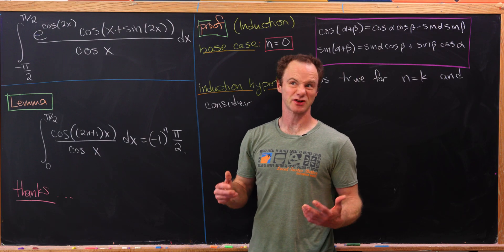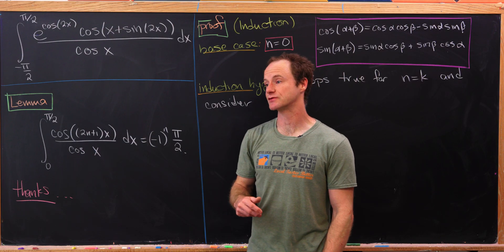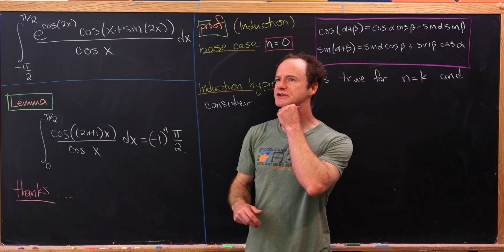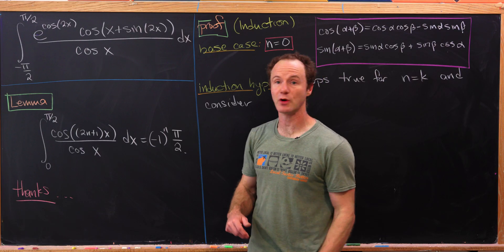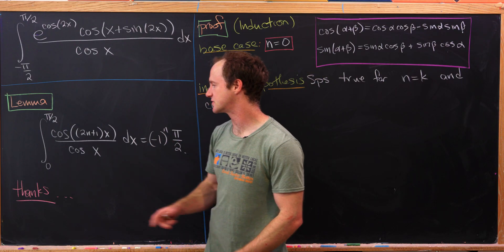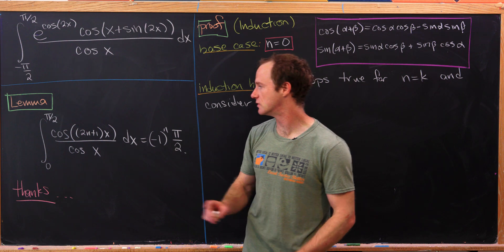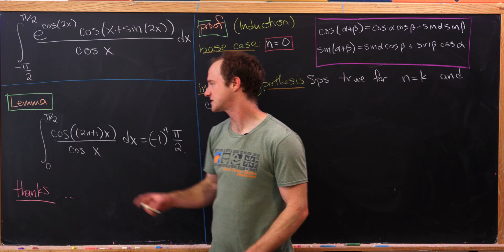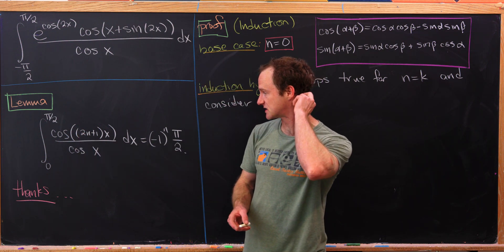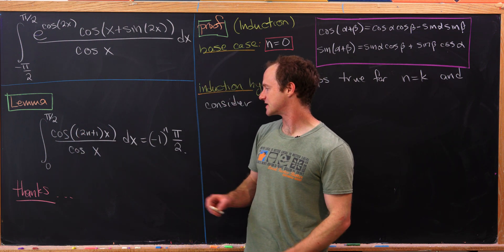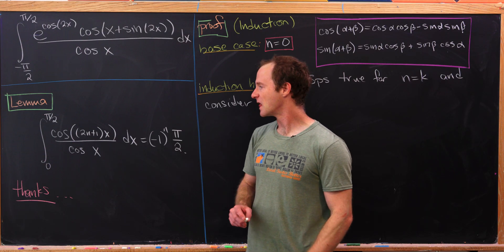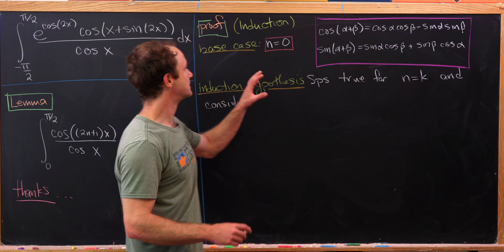This has a really nice result. In order to do this we're going to use the following lemma, which we will prove: the integral from 0 to pi over 2 of cosine of (2n+1)x over cosine x dx equals minus 1 to the n times pi over 2. We'll prove this by induction.